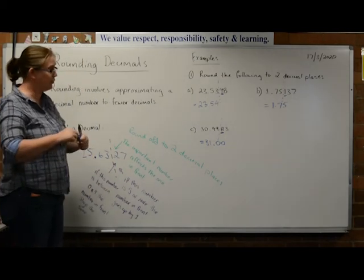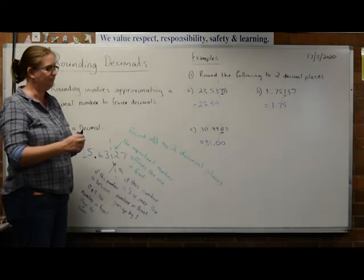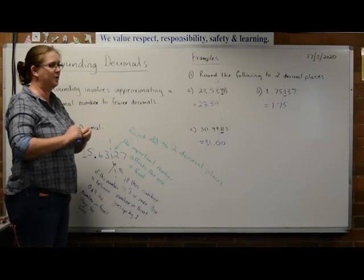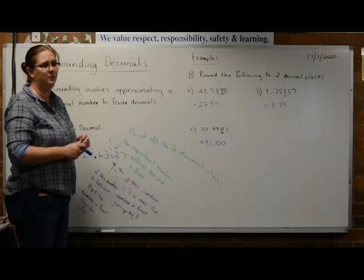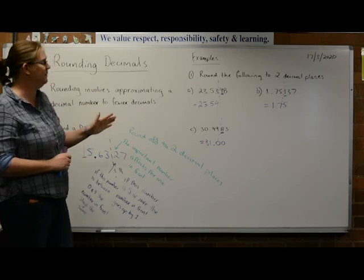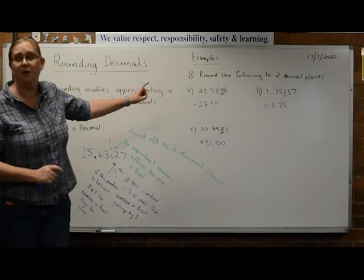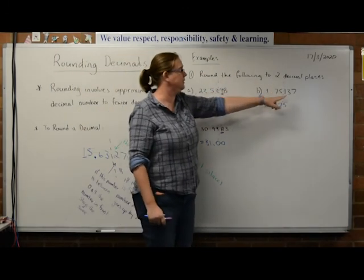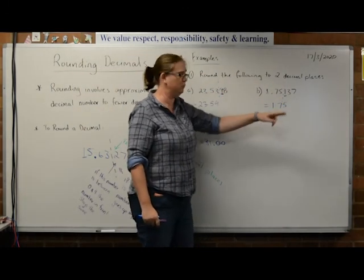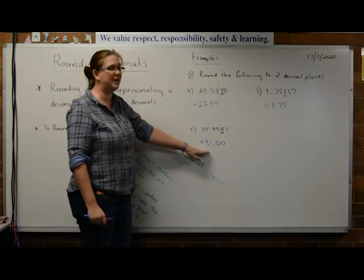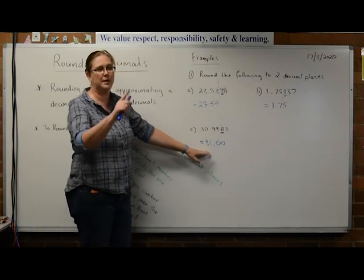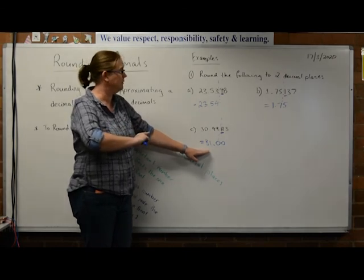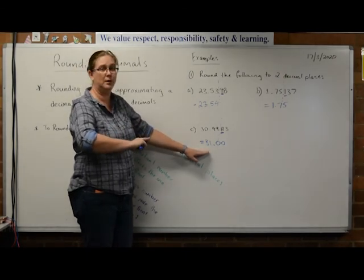That is a tricky one. Do you guys think you'd be able to cope with that? Yeah. Because we've looked at five and above — just normal. We've looked at zero to four — just normal. And we've also looked at that tricky one where we're actually affecting other numbers as well. If we're good with that, we'll get on to the exercise.